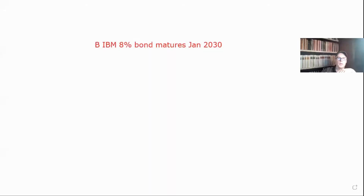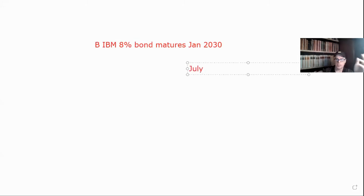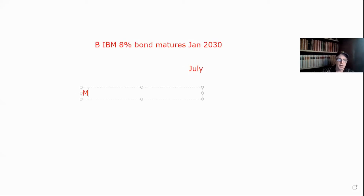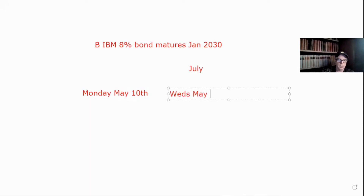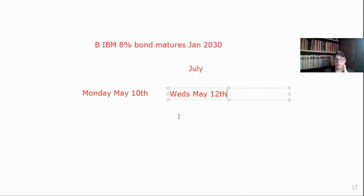So let's do some math. Johnny buys one IBM 8% bond, matures January 2030. So if it matures in January 2030, that means the other payment date is six months later, which is going to be July. So if I give you a maturity date, we always know that's one of the payment dates, and the other one is going to be six months away. Now let's say Johnny buys it on Monday and since it's a corporate bond, it's going to settle on Wednesday, May 12th. On May 12th it's Johnny's bond. After that, all the interest going forward until July is going to be Johnny's. But he has to pay the seller all the interest that is accrued since January up until the day before settlement, which is May 11th.